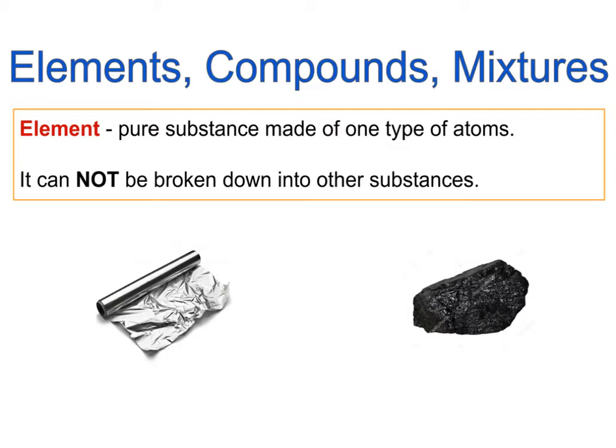For us to talk about chemistry, to talk about different substances, we need to define several terms that we will be using very frequently. Those terms are elements, compounds, and mixtures. So what do we call elements, what do we call compounds, and what do we call mixtures? Elements are the pure substances made of one type of atom.